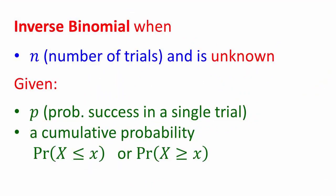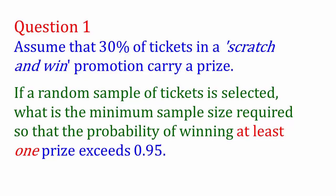In this video, we'll be looking at inverse binomial. The first example involves inverse binomial when N, the number of trials, is unknown, and the information given is P, the probability of success in a single trial, and a cumulative probability. The question is: assume that 30% of tickets in a scratch and win promotion carry a prize. If a random sample of tickets is selected, what is the minimum sample size required so that the probability of winning at least one prize exceeds 0.95?